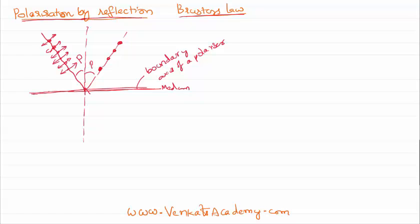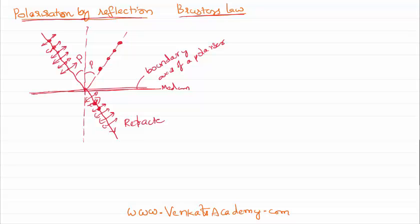While the light is refracting, all horizontal vibrations are definitely refracted. However, it is not the case that all vertical vibrations are reflected — very few vertical vibrations are also refracted. So the reflected light is completely polarized, whereas the refracted light is only partially polarized.